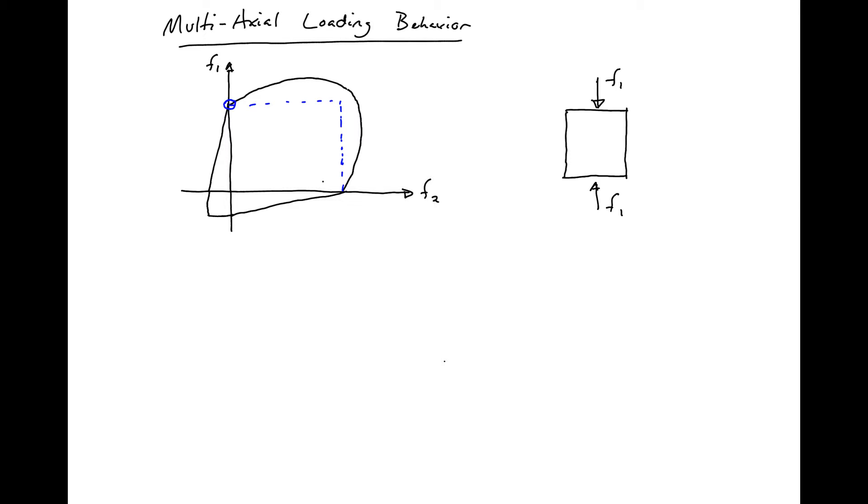If we add any kind of additional compressive stress F2, you can see that we're going to increase our F1 strength. If we were to make it, let's say about 0.5 F2, you can see that our compressive strength in the F1 direction would greatly increase.